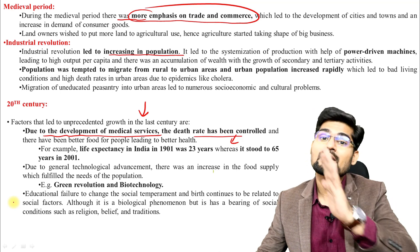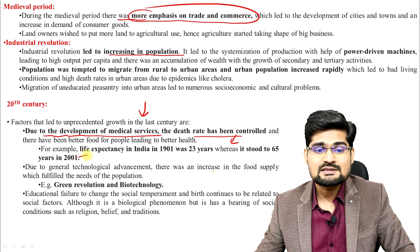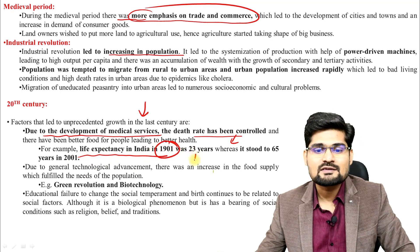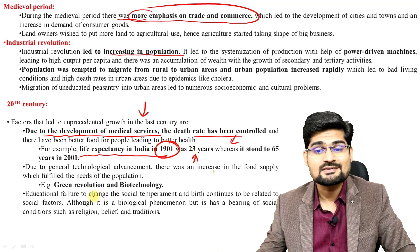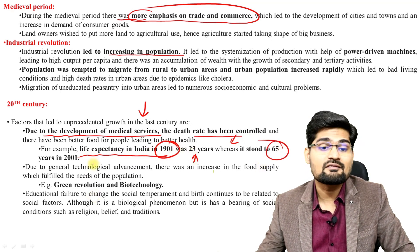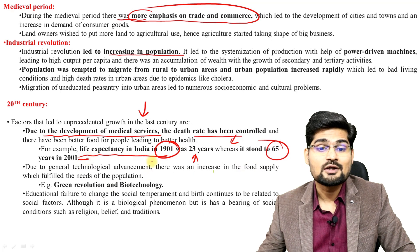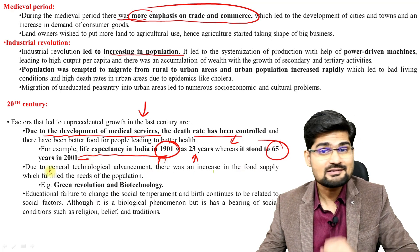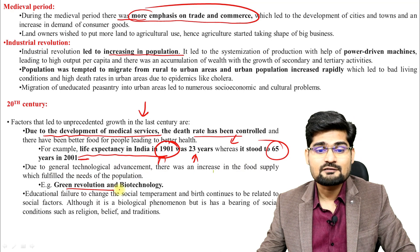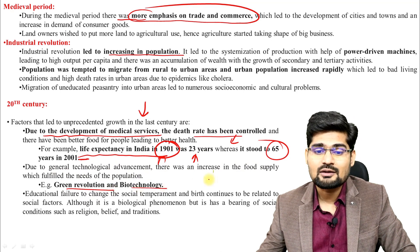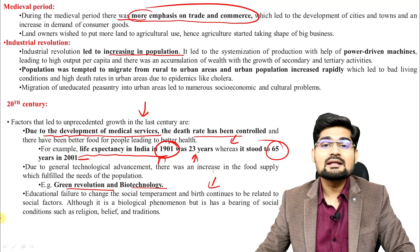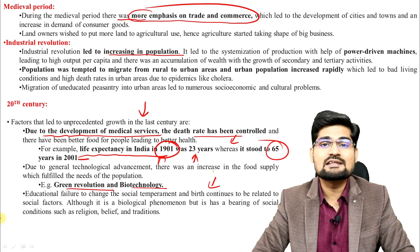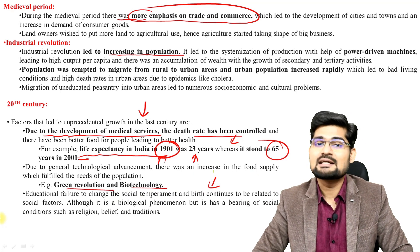Due to the development of medical services, the death rate came down. When death rate is low and birth rate is still high, population goes up. For example, life expectancy in India in 1901 was just 23 years and it stood at 65 in 2001 — a very significant change. Then green revolution and biotechnology all led to a huge amount of population explosion across the developing countries of the world.